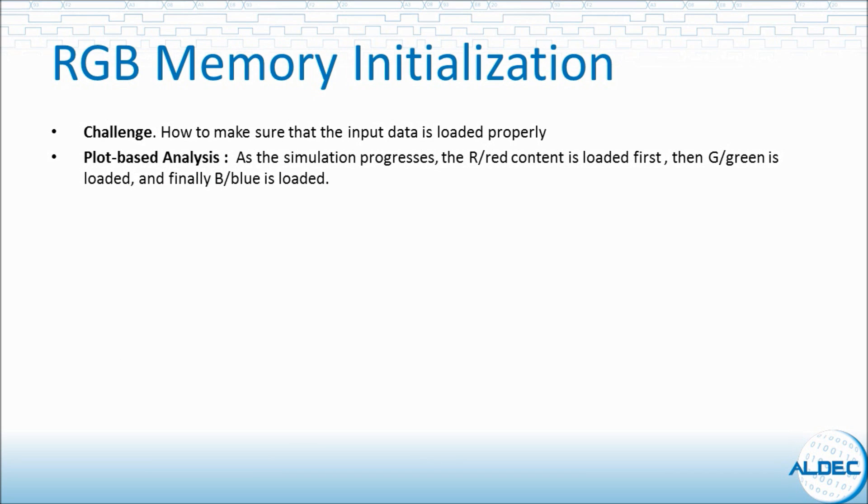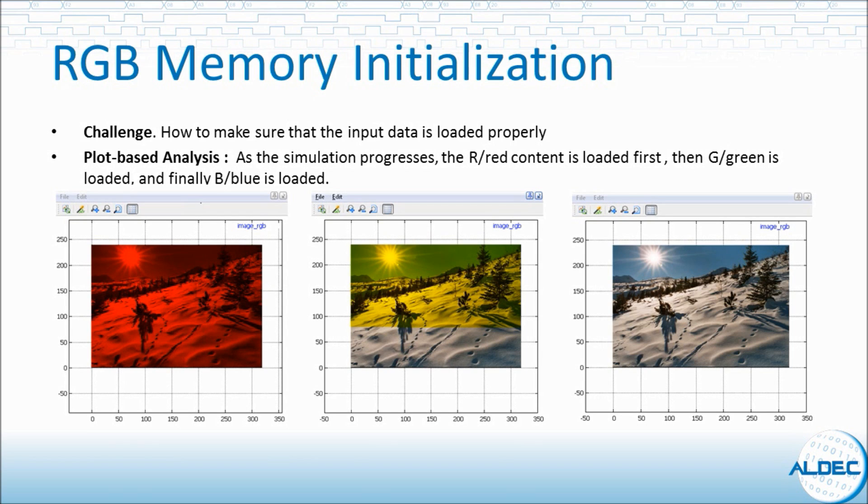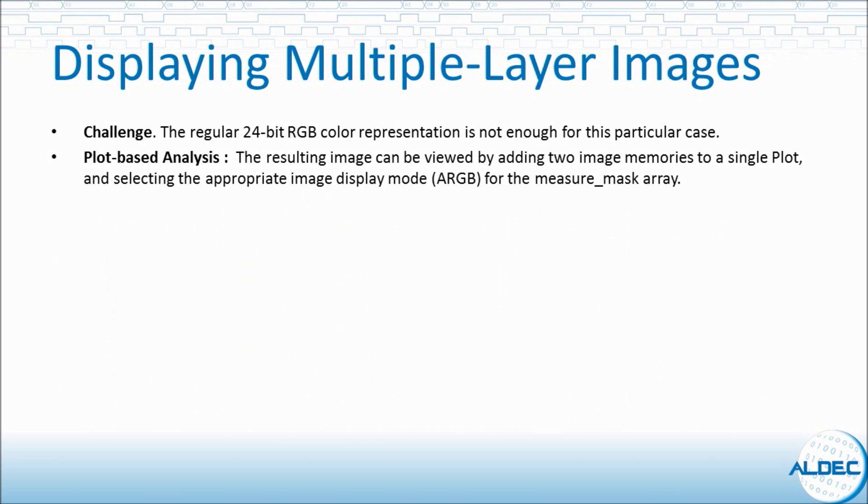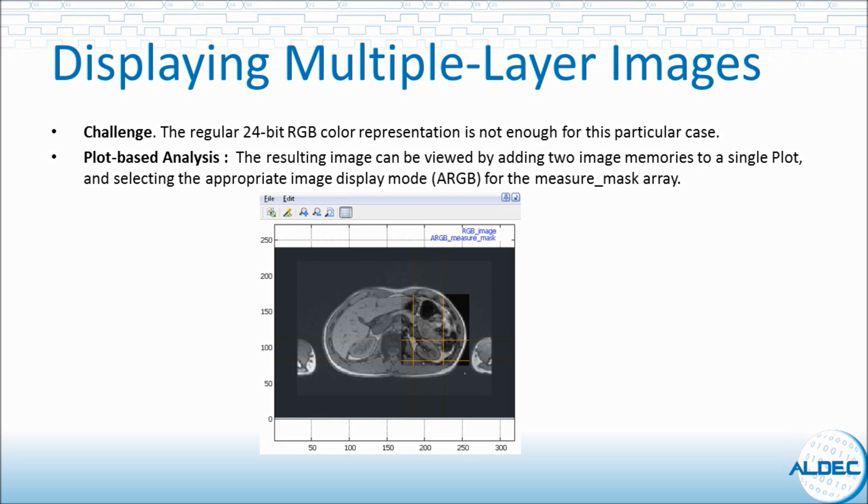Here are some other examples where plot based analysis is beneficial. In an image memory initialization, how do you make sure the image is initialized correctly? To do this, a plot based scenario is used when data is loaded from an array containing the RGB values and as each color component is loaded, you can look at the plot and watch for inconsistencies. Another example here shows that on top of the three color components, a fourth component can also be used to set transparency to view an auxiliary measurement mask consisting of measurement window, measurement lines and shadowing effects. Here is the image with two images overlapped but the second image or the mask is transparent so that the underlying image is visible.